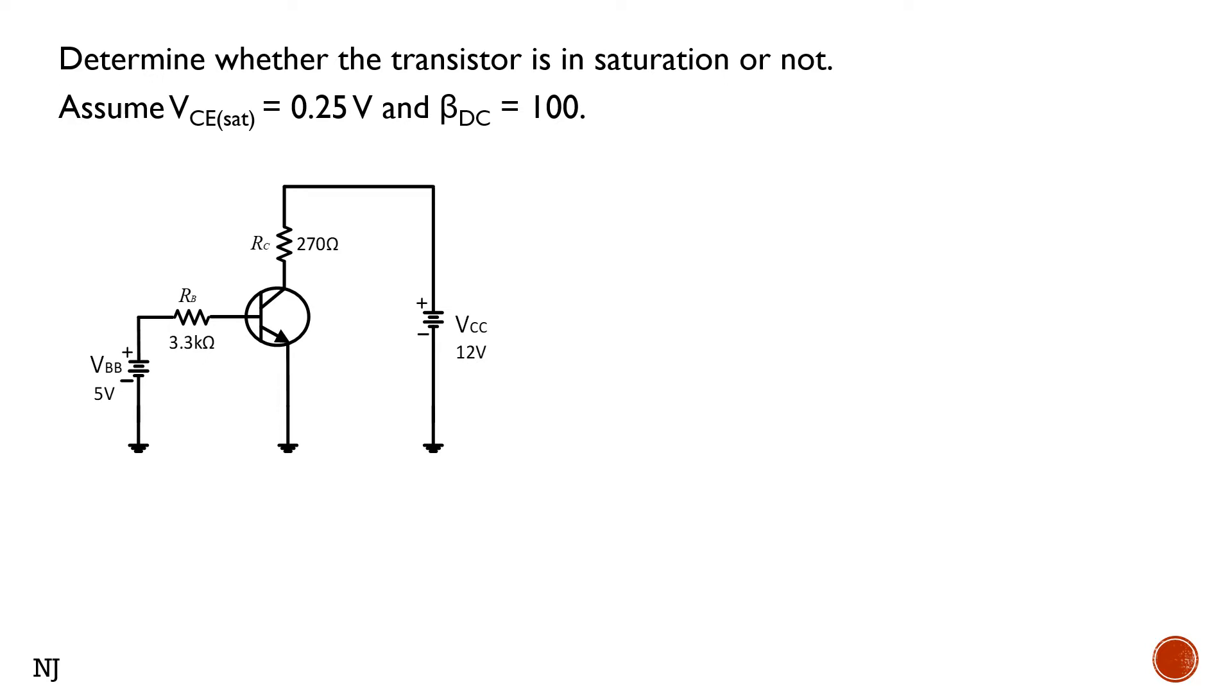In this example, we want to determine whether the transistor is in saturation or not. Assume VCE saturation is 0.25V and beta DC equals 100. So what should we do?